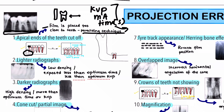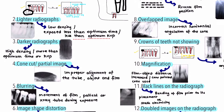Another reason for the apical ends getting cut off is if the length of the teeth is too large. Even if the film is placed properly and all techniques are followed, if the tooth length is large, there are still chances the apical end gets cut off. In that case, you need to use a proper film size.